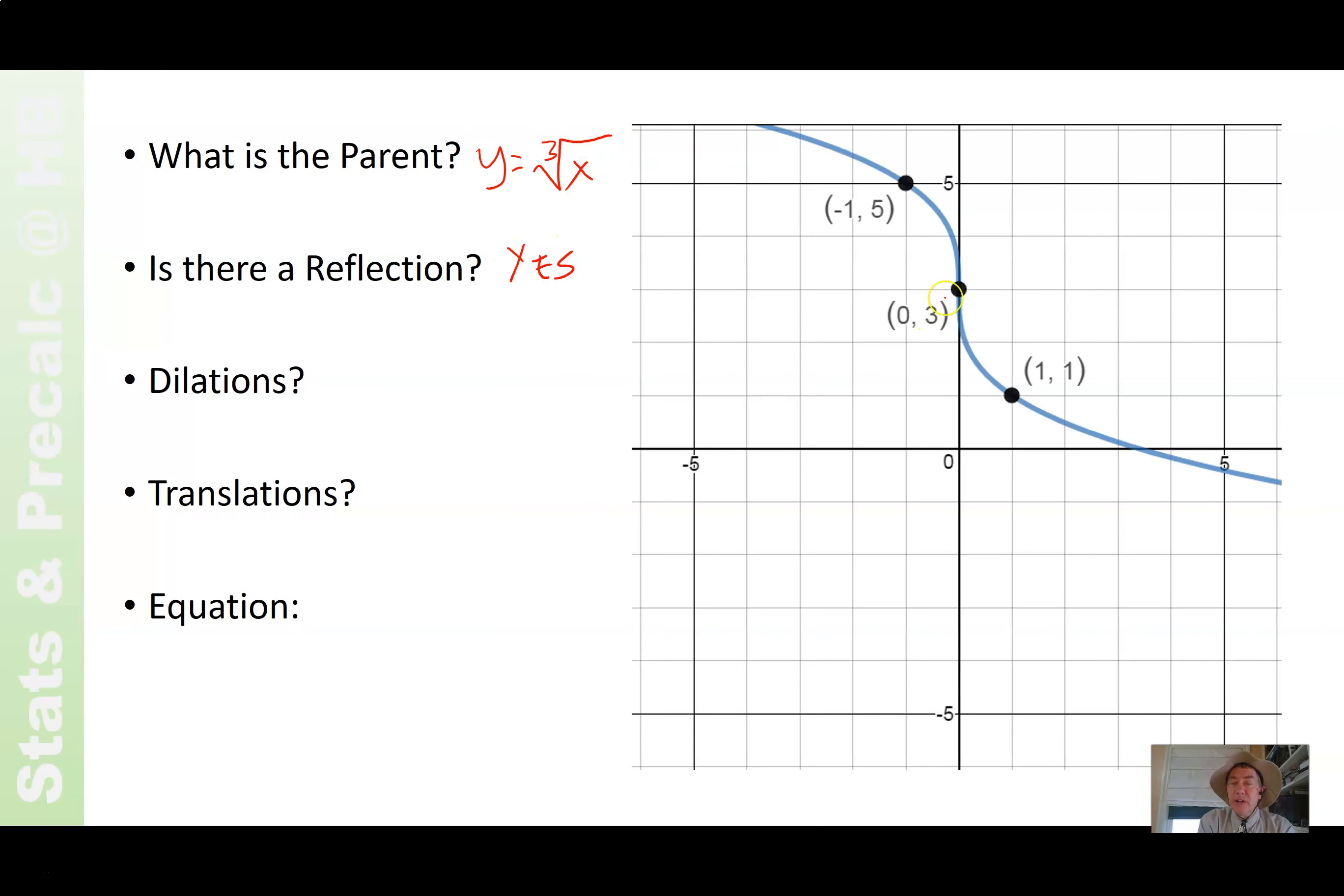Instead of starting low and going higher, it starts high and gets lower. Is there a dilation? Yes, indeed. Instead of 1 and 1 in the x direction, it's 1 and down 2, or up 2 and left 1. So yes, by 2 in the y direction. Or you could think of it, you could combine these and call it by negative 2 in the y direction if you like. And it is indeed translated up 3. So y minus 3 divided by negative 2 for your dilation is the cube root of x. Or, if you prefer, y equals negative 2 times the cube root of x plus 3.